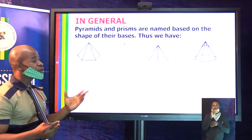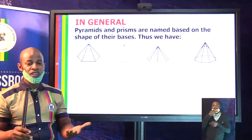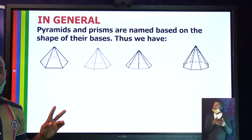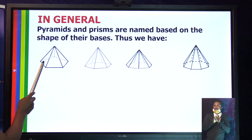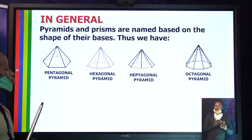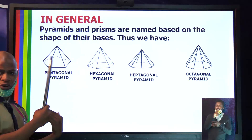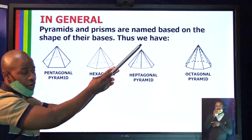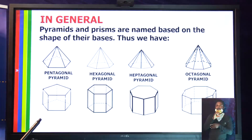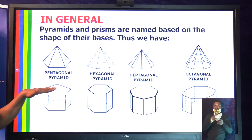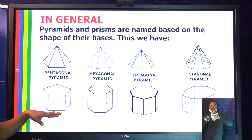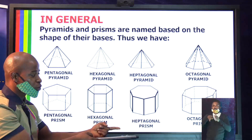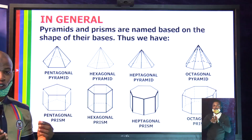In general, prisms and pyramids are named based on the shape of their base. A pyramid with a pentagonal base is a pentagonal pyramid; with six sides it is a hexagonal pyramid. You can also have an octagonal pyramid. Prisms, on the other hand, do not have pointed tops — same flat shape at the top and bottom. You have pentagonal prism, hexagonal prism, and octagonal prism.